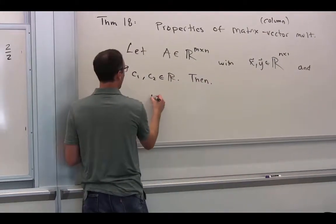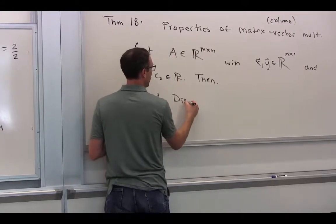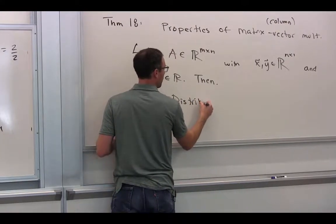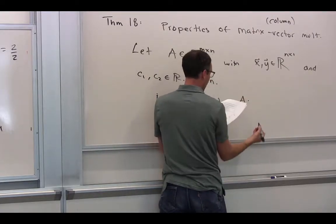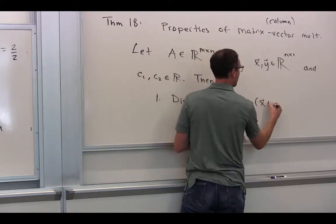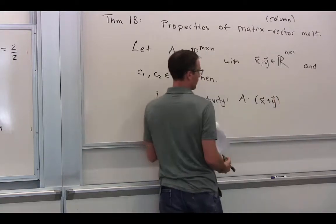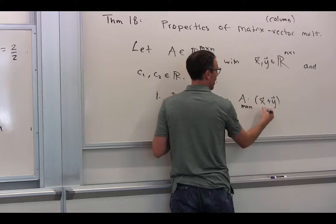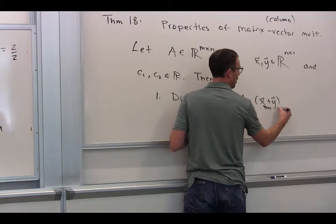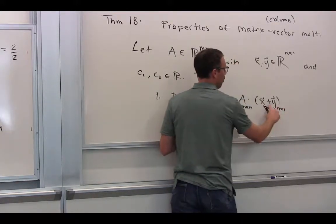So we're going to have three properties. One of them is going to be called distributivity, which says that if I take a matrix and I multiply over a vector addition, this is kind of interesting. How big is this matrix? m by n. How big is this vector? n by 1. How big is this one? n by 1.